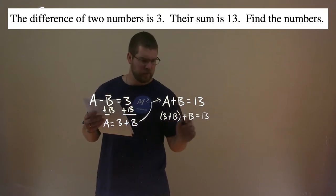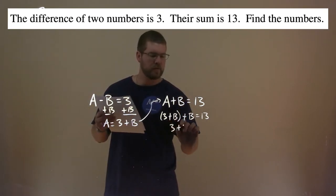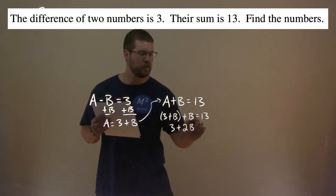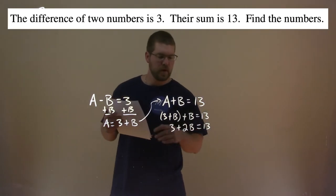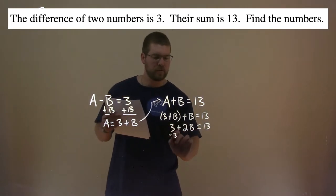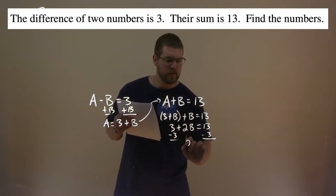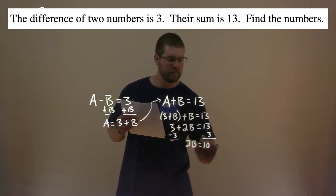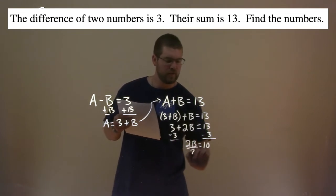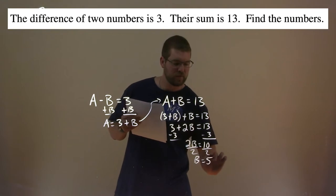Keep simplifying. 3 plus 2B — B plus B is 2B — equals 13. Subtract 3 from both sides, and 2B equals 13 minus 3, which is 10. Divide both sides by 2, and B equals 5.